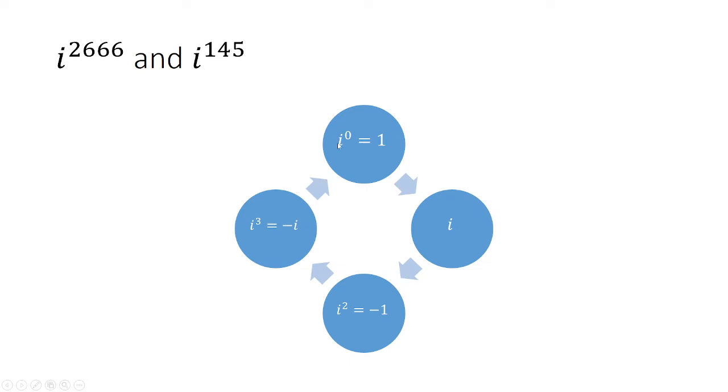Well, notice here that i raised to a power goes in a circle. So we have first i to the 0 is 1, then i to the 1st is i, i squared is negative 1, i cubed is negative i, and then i to the 4th will be the same thing as i to the 0,